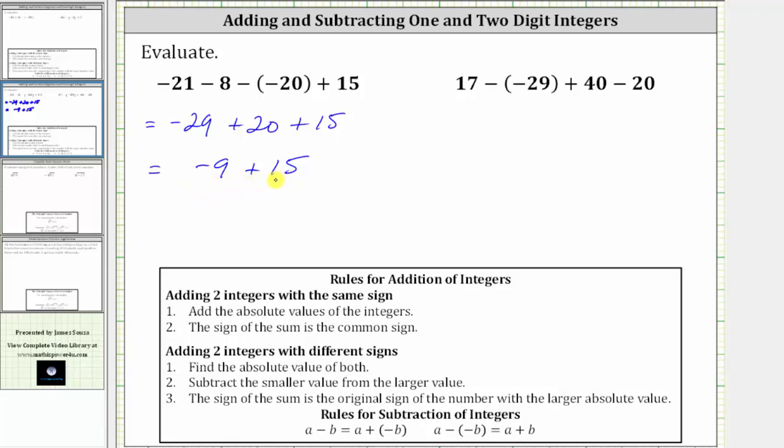we are down $9. So the remaining expression is negative 9 plus 15, which is a gain of $15. So if we lose $9 and then gain $15, we are up $6, which is why the sum is positive 6. So the given expression is equal to positive 6.